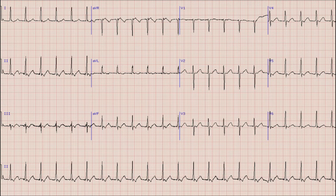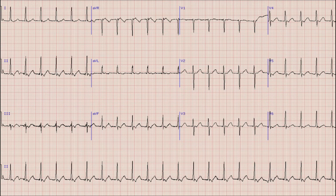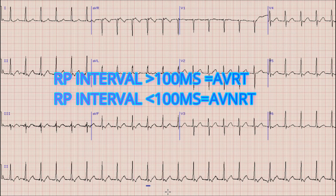There are ECG clues to differentiate between AVNRT and AVRT. First, the presence of delta waves — a short PR interval with upward slurring of the initial portion of the QRS complex — suggests AVRT or WPW syndrome. Second, the RP interval, which is the time from the start of the R wave to the start of the P wave, is helpful. An RP interval greater than 100 ms favors AVRT, while an RP interval less than 100 ms suggests AVNRT.